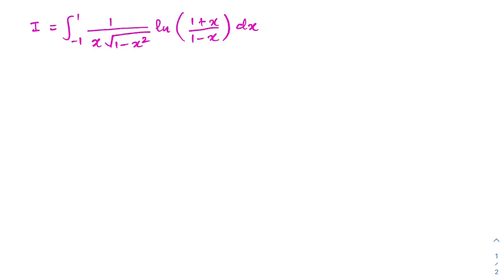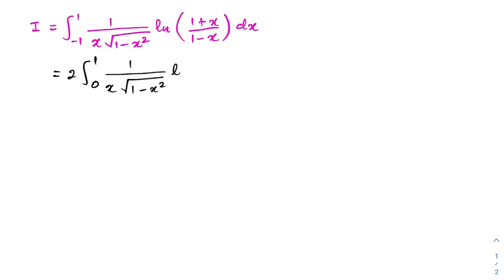What do you think about this problem? If you find the correct path, I think this is an easy integral. I think you know about odd functions. So as a first step, we know this is equal to 2 times the integral from 0 to 1 of 1 over x times square root of 1 minus x squared times natural log of (1 plus x) over (1 minus x) dx.